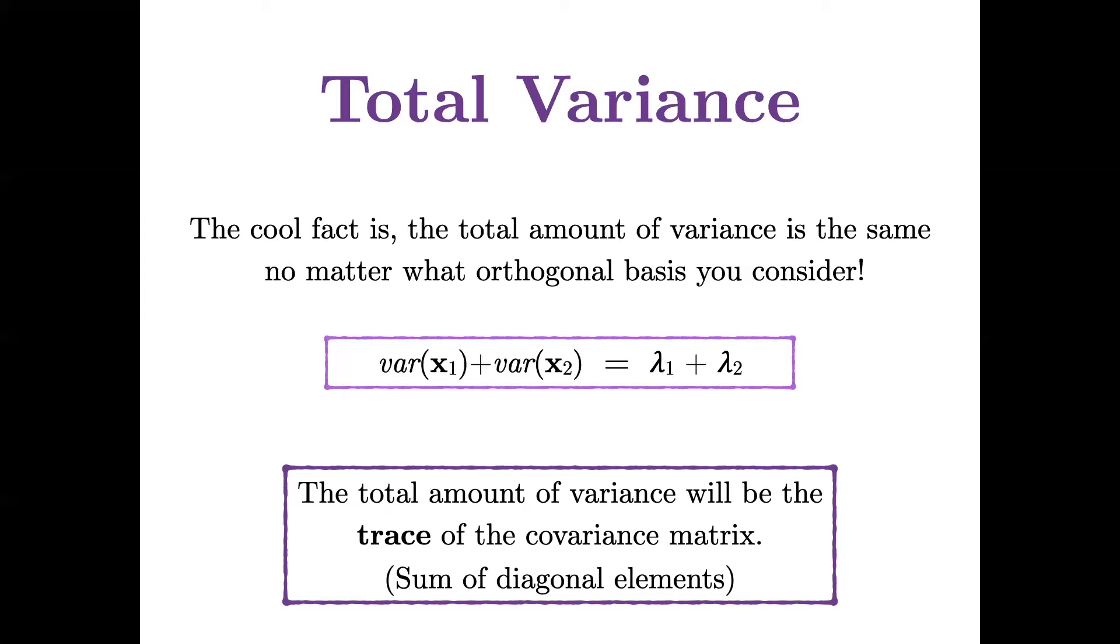Now, if you don't remember, it's okay, the trace is a matrix function that adds the diagonal elements. So if you recall, in the covariance matrix, the diagonal elements give us the variance of each variable. So if I add those up, that's really what this expression here is pointing to, just adding up the variances of the variables.